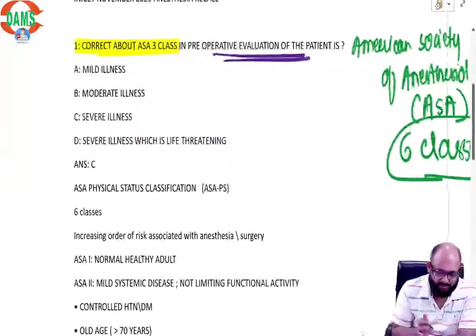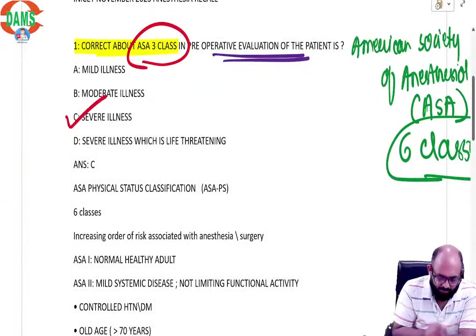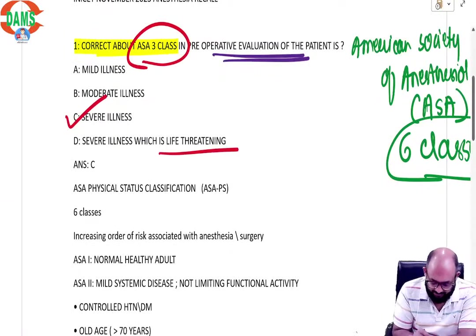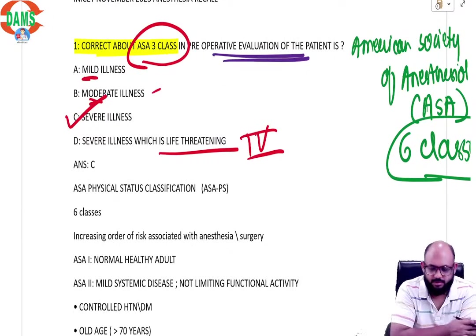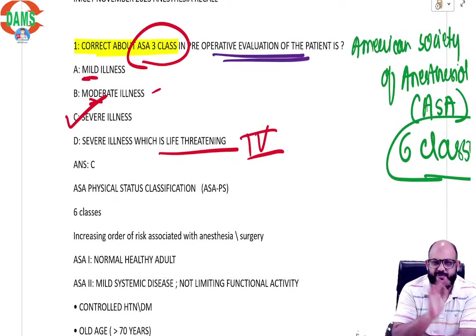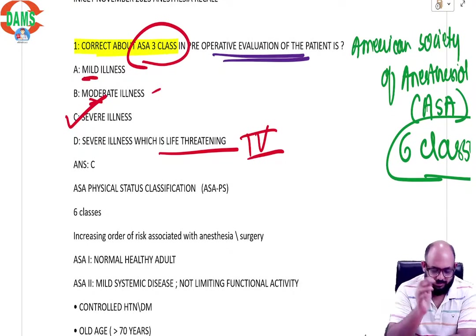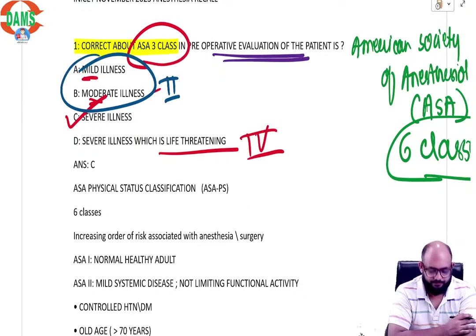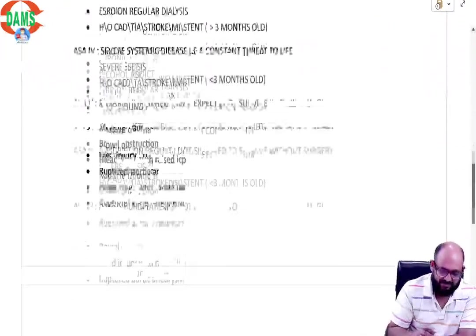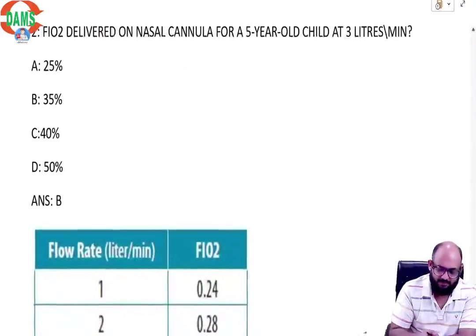So the question was correct about ASA-3, it would be severe illness. Severe with life threatening would be four, moderate would be... So there is nothing called as mild and moderate. That is what the recall I got. There is no difference between mild and moderate. Mild and moderate are both two. So this is ASA physical status classification, few examples that we already know.